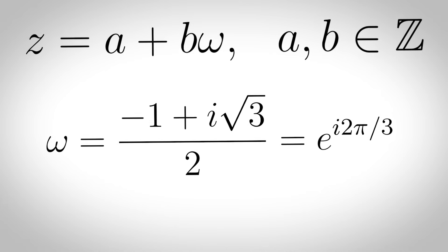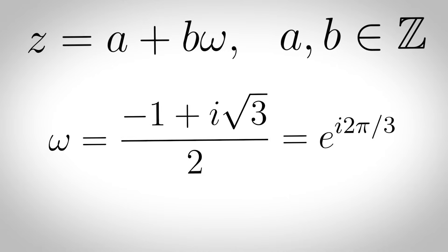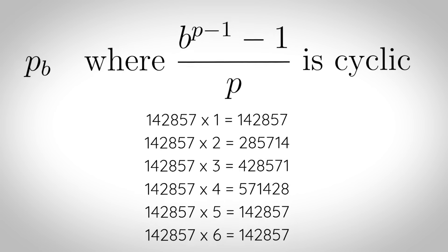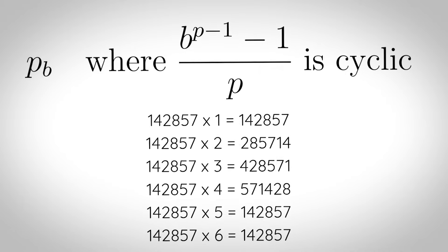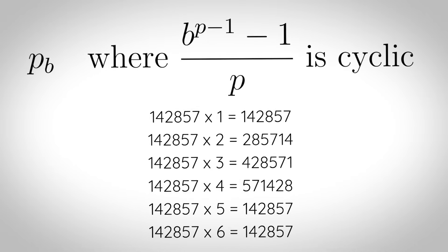Eisenstein integers are of the complex form z equals a plus b omega, where a and b are integers and omega equals minus 1 plus i root 3 over 2, which equals e to the i 2 pi over 3. Long primes: primes p for which, in a given base b, b to the power of p minus 1 minus 1 over p gives a cyclic number — an integer for which cyclic permutations of the digits are successive integer multiples of the number. For example, 142857 times 1 is 142857 and when you multiply by 2 you just rotate the digits, then by 3, 4, 5, and 6 — you're just rotating the digits. Pretty cool.